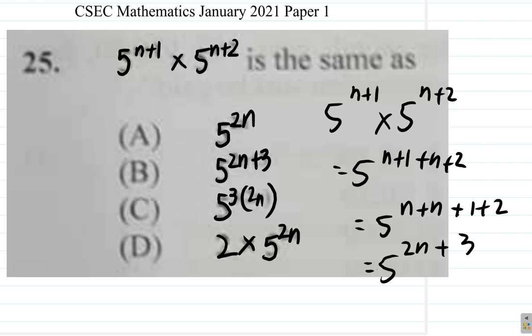Alright, so here, this, the answer is B. 5 to the 2n plus 3.